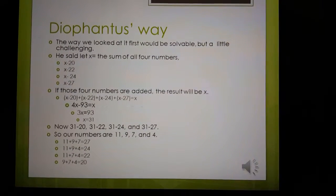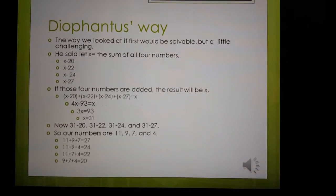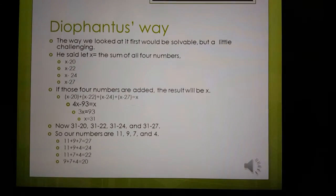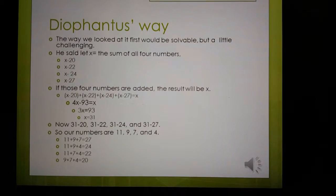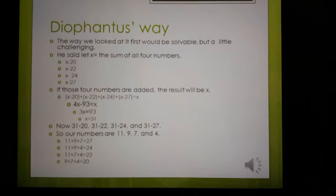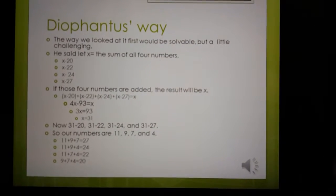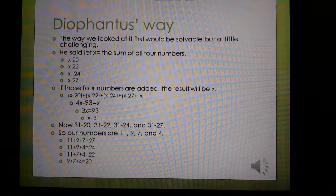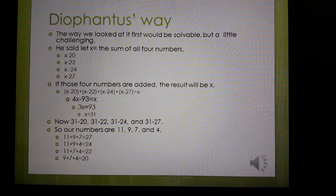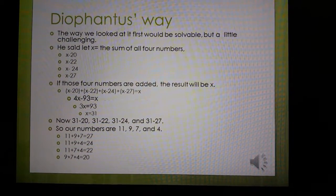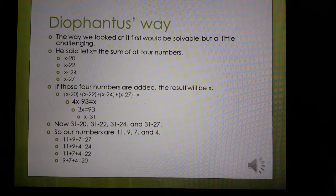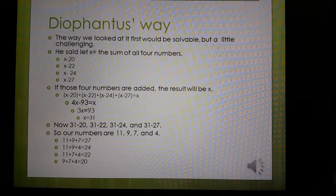So he looked at it as, let's say that x is the sum of all four numbers. So x minus 20, x minus 22, x minus 24, and x minus 27. If those four numbers are added, the result will be x. So x minus 20 plus x minus 22 plus x minus 24 plus x minus 27 gives you x.